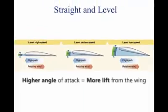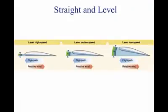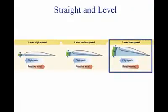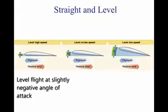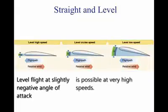The higher the angle of attack, the more lift is provided from the wing. If a pilot can maintain a high angle of attack and a coordinated thrust level, the aircraft can fly straight and level at low speeds. Level flight at even slightly negative angle of attack is possible at very high speed.